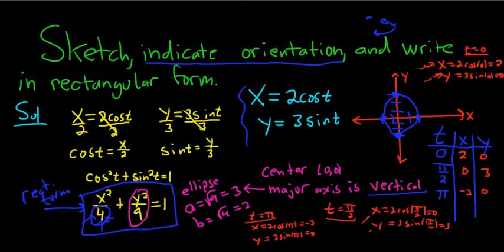So first we're at 2 comma 0, so first we're here. Then we're at 0 comma 3, so then we're up here. And then we're at negative 2 comma 0, so then we're here. So it looks like the orientation is counterclockwise. So these arrows here indicate the orientation.